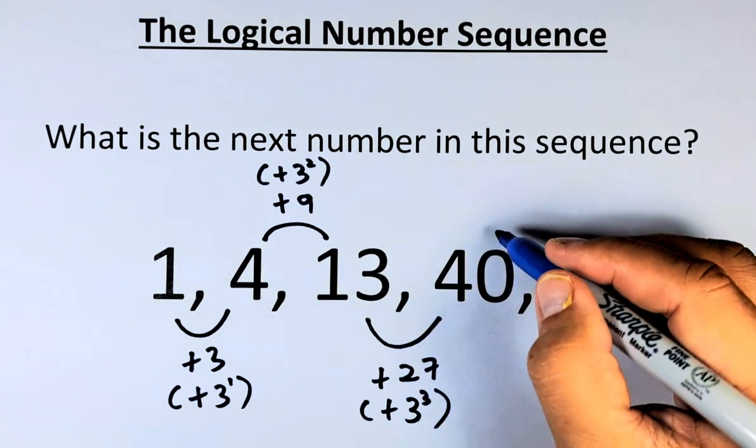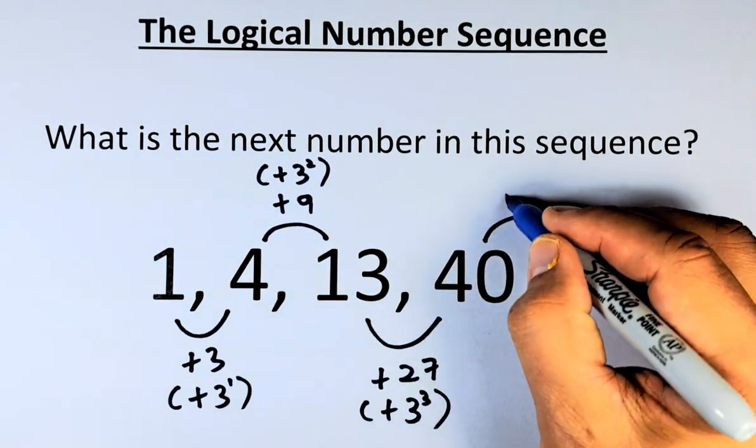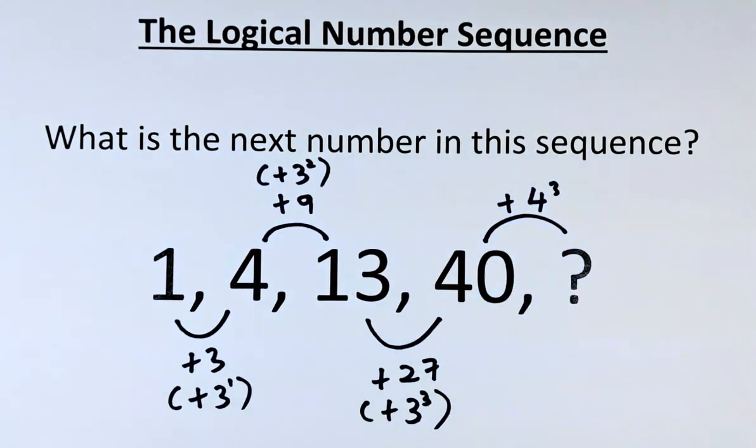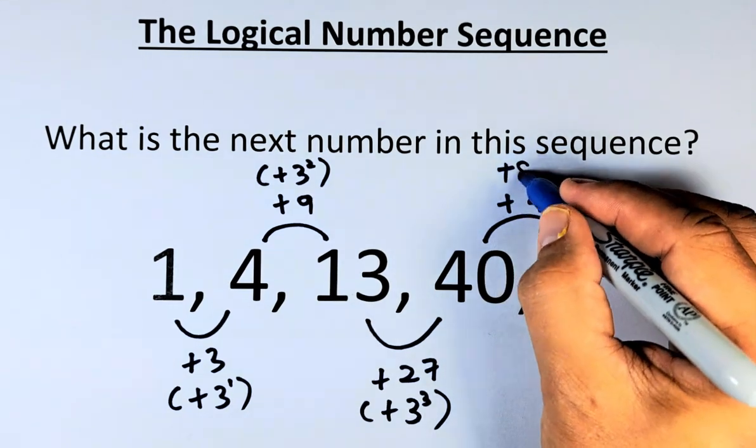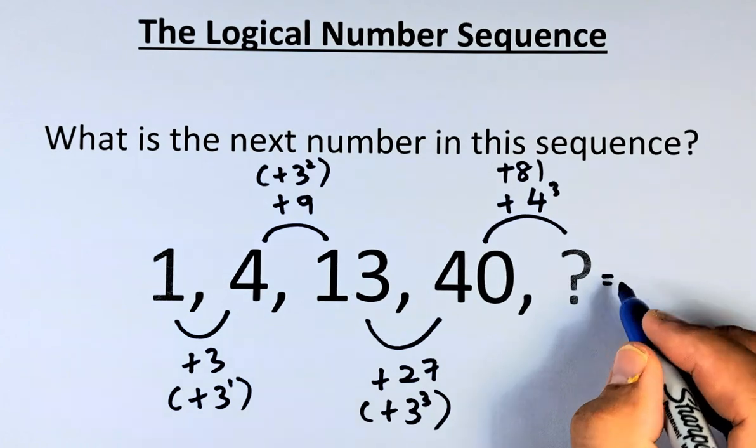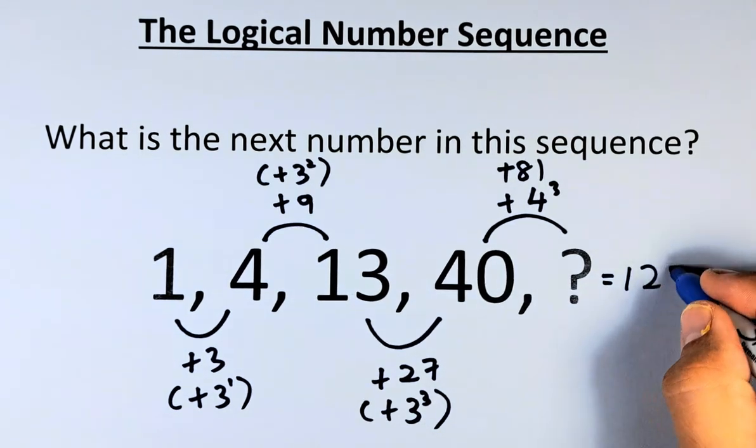And last but not least, from 40 to the question mark, we are going to add 4 to the power of 3. 4 to the power of 3 is 81. So 40 plus 81, and the answer is going to be 121.